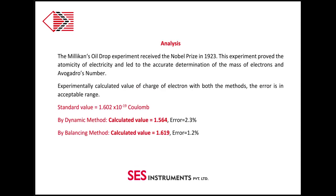The Millikan's Oil Drop experiment received the Nobel Prize in 1923. This experiment proved the atomicity of electricity and led to the accurate determination of the mass of electrons and Avogadro's Number. Experimentally calculated values of charge of an electron with both the methods, the error is in acceptable range.